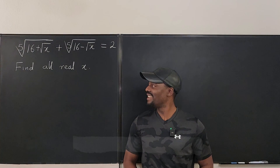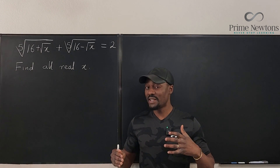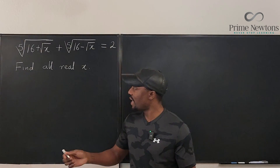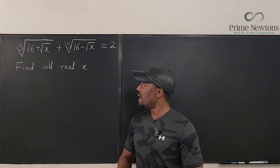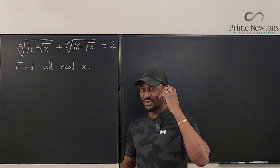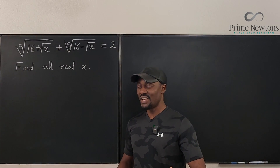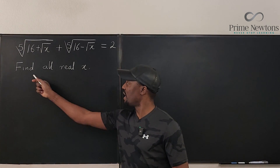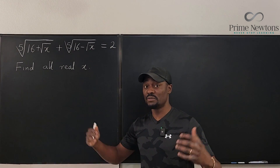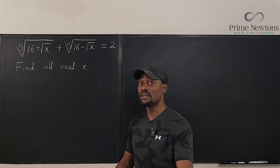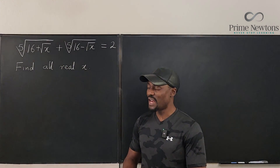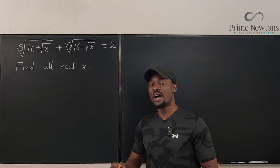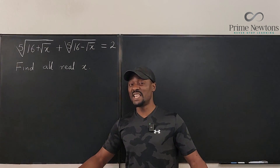Welcome to another video. We have a radical equation right here, similar to something I did recently, and we're going to adopt a similar strategy. If you're very familiar with numbers and look closely at this equation, you can guess what the answer is. We're supposed to find all real values of x. There is only one real value of x that satisfies this equation, and if you look skillfully you could tell what the answer is.